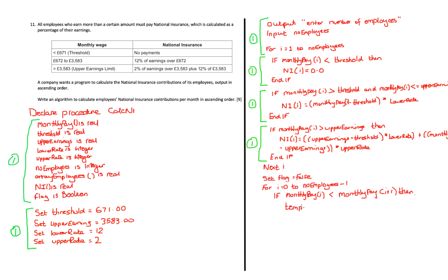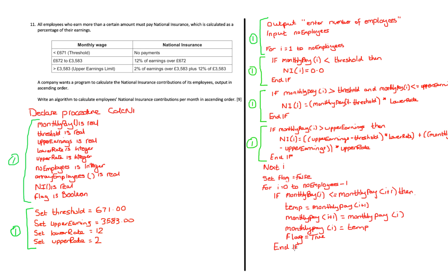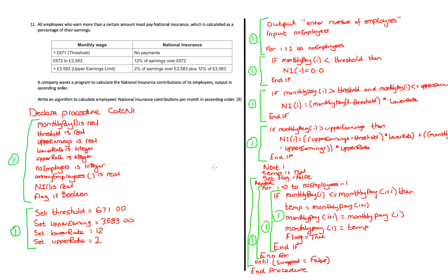To perform the swap, I copy `monthly_pay[i+1]` into a temporary variable, then assign `monthly_pay[i]` to `monthly_pay[i+1]`, then put temp back into `monthly_pay[i]`, and set the flag to true. After all swaps, I end the if, end the for, and break out of the loop if no swaps were made on a pass. There are three marks on offer: one for the outer loop, one for the inner loop, and one for the swaps — making nine marks total for the question.